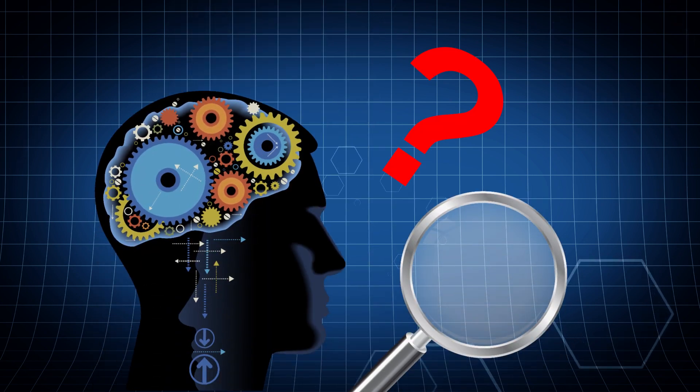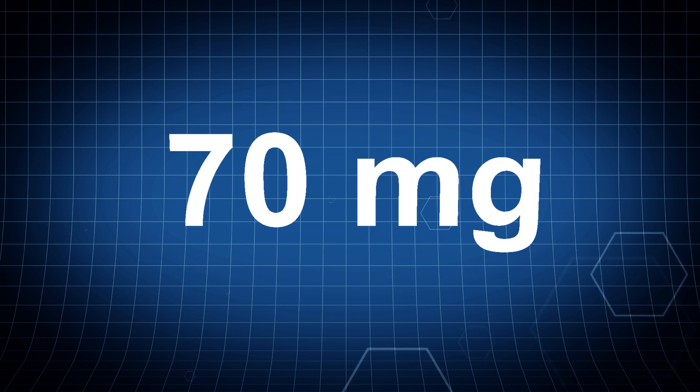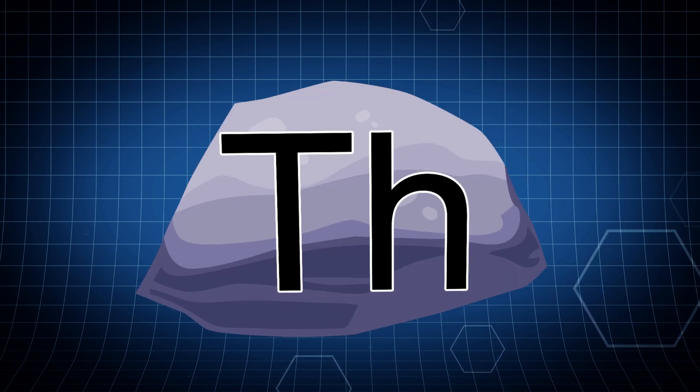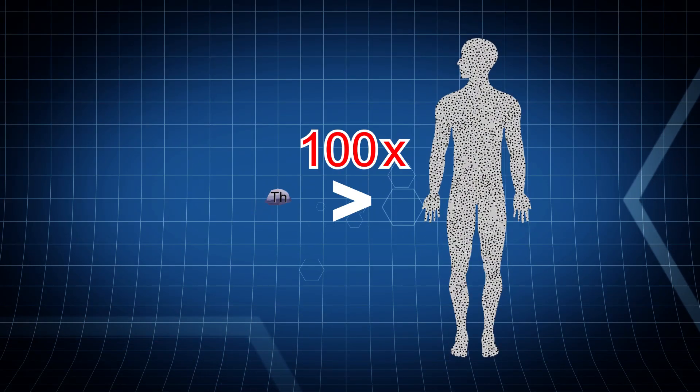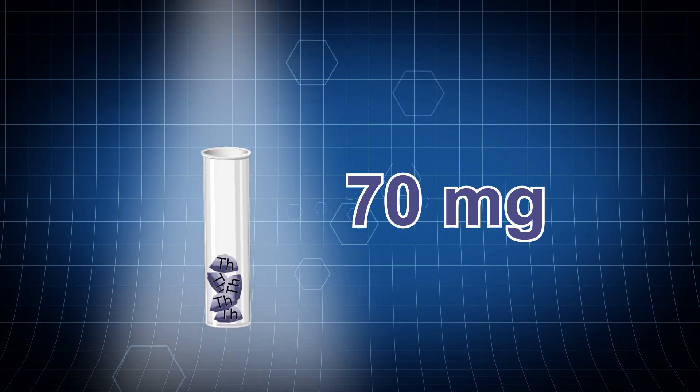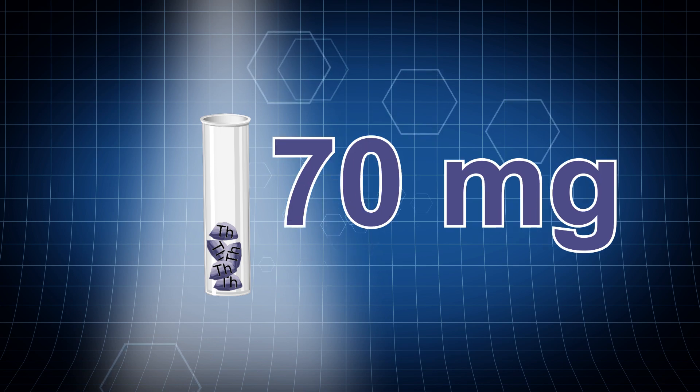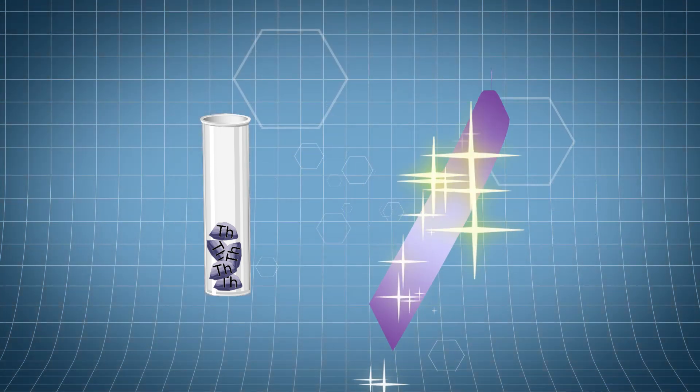I know what you're thinking. All that for 70 milligrams? Well, think about it like this. A nanogram of thorium, a millionth of a milligram, has more than 100 times as many atoms as there are cells in the human body. So 70 milligrams is a really gargantuan amount of thorium and will go a long way towards helping in cancer treatments.